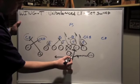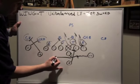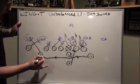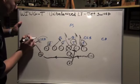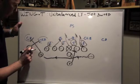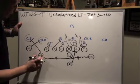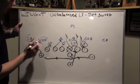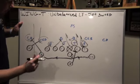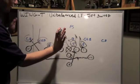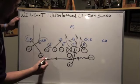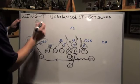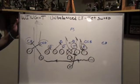The jet sweep ball carrier needs to get upfield and cut outside of the split end's crack and inside of the wing back's kick-out. This creates a tunnel — sealing in and kicking out — which leads to an easy running lane right up the field for a large amount of yards.